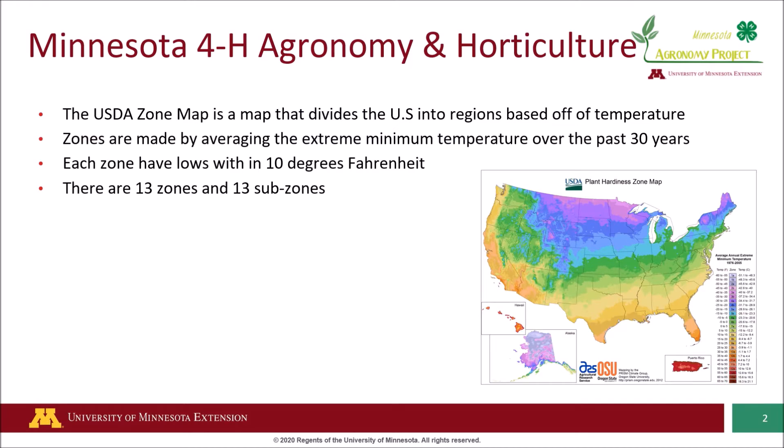The USDA plant hardiness zone map is a map that divides the U.S. into regions based off of temperatures. Each zone is made by averaging the extreme minimum winter temperature over the past 30 years. Note that this is the extreme minimum temperature — not the average, but the extreme.